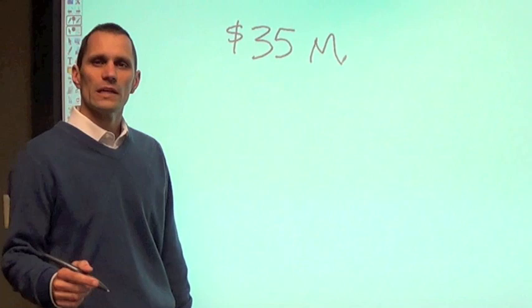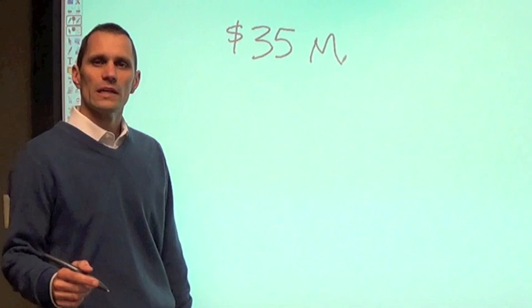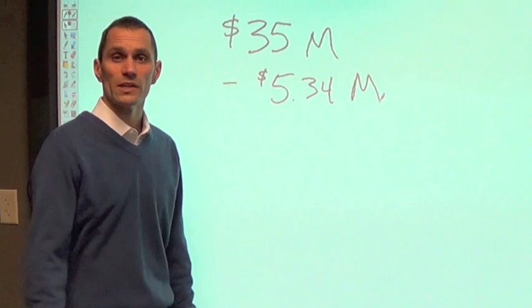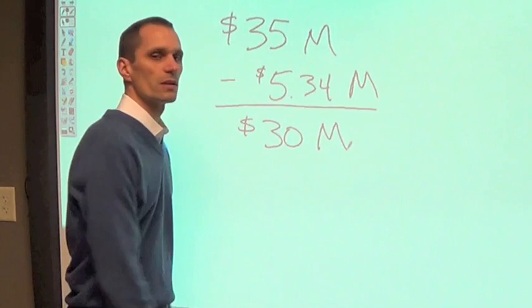Tax law currently allows one to leave $5.34 million to heirs free of any type of estate tax. So if we round our numbers, there's roughly $30 million of his estate that will still be subject to tax.